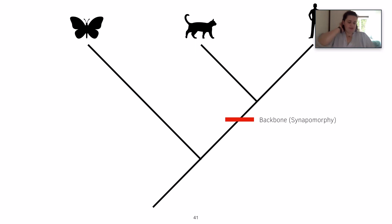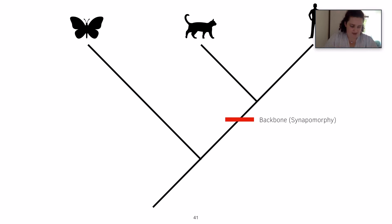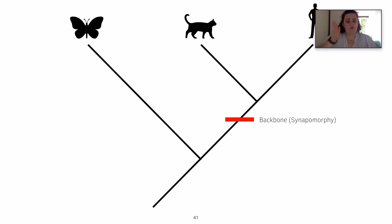We're going to run through an example involving humans, cats and butterflies. Cats and humans both have a backbone whereas butterflies do not. This backbone is known as a synapomorphy — a derived or specialist character that originated at their last common ancestor. This backbone evolved after the butterflies had evolved, at the last common ancestor between the cat and the human.